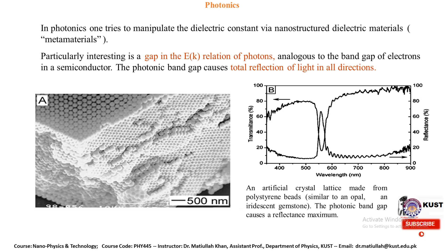The photonic band gap causes a reflectance maximum. The transmission and reflectance are shown in percentage over a wavelength range of around 400 to 900 nanometers, with different values in different regions. The key point is that the gap in the ω-k relation is similar to the band gap of electrons in semiconductor materials.